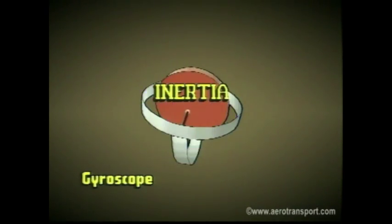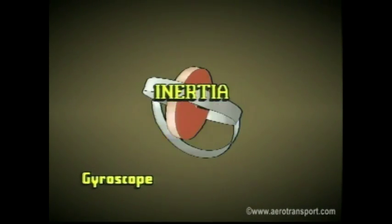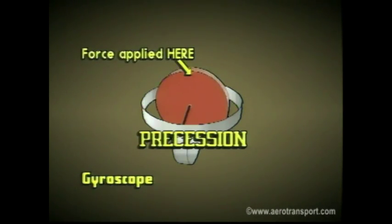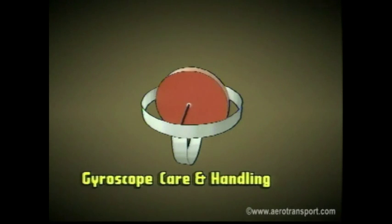Gyroscopic inertia means the rotor will remain fixed regardless of how the base of the gyroscope is moved. Precession occurs when a force is applied to a spinning object. Simply put, the spinning object will react as if the force had been applied at a point 90 degrees from where it was actually applied. Because the gyro is a precise instrument, it requires special care.